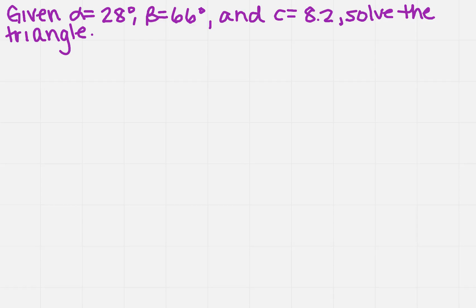Given alpha equals 28 degrees, beta equals 66 degrees, and C equals 8.2, solve the triangle.